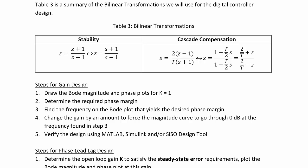The steps for root locus gain design are to draw the Bode magnitude and phase plots for k equal 1, determine the required phase margin, find the frequency on the Bode plot that yields the desired phase margin, change the gain by an amount to force the magnitude curve to go through 0 decibels at the frequency found in step 3, and verify the design by using MATLAB, Simulink and/or SISO design tool.